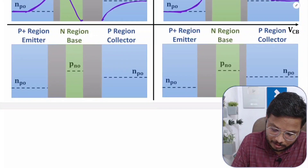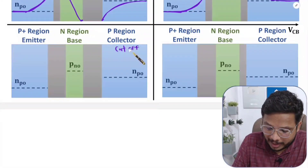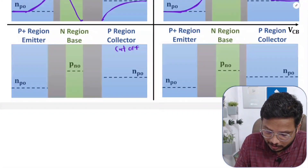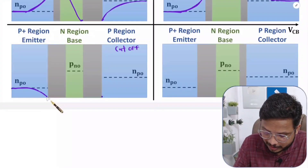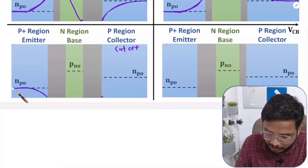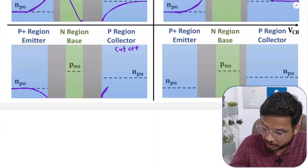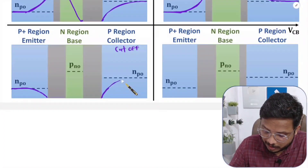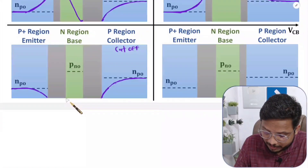Where both VEB and VCB are negative — both junctions are in reverse bias — the BJT is in cutoff. In reverse bias, minority carrier concentration is at a minimum near both junctions. Far from each junction the concentration rises back toward the equilibrium value NPO. Both the emitter-side and collector-side show this reduced minority carrier concentration near the junctions.